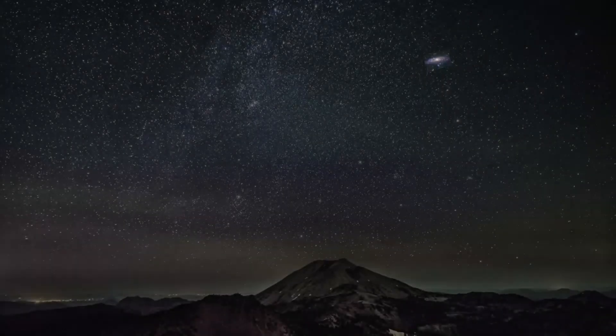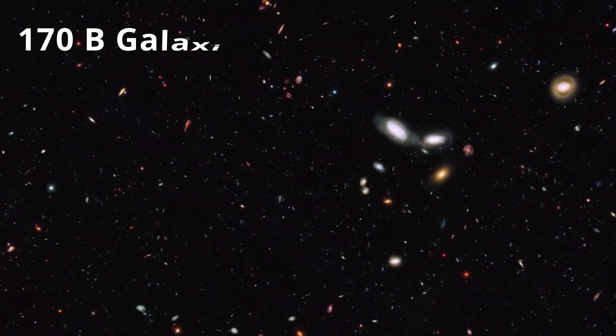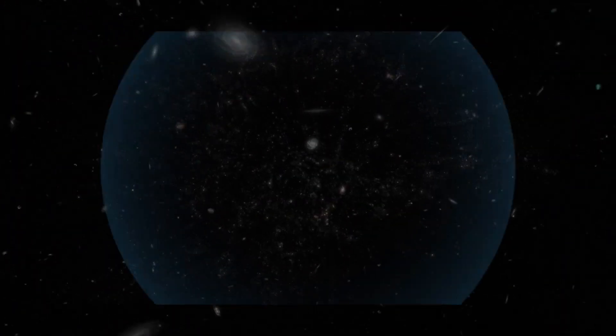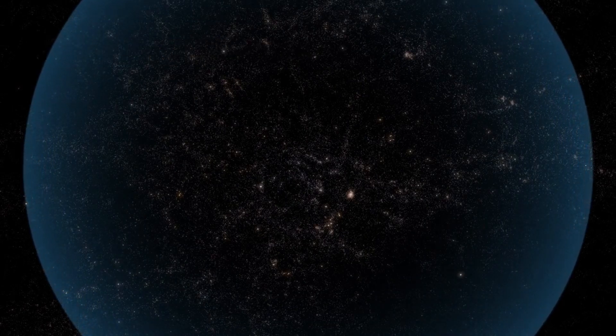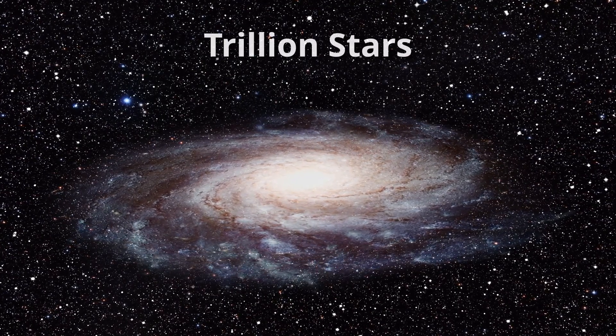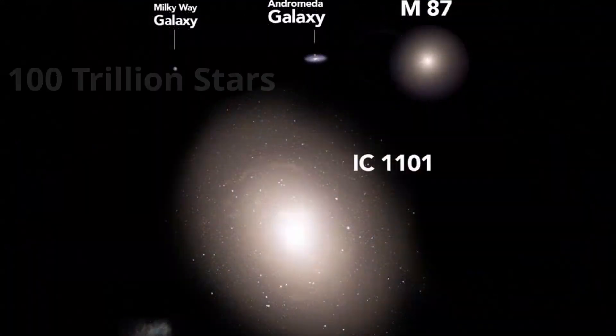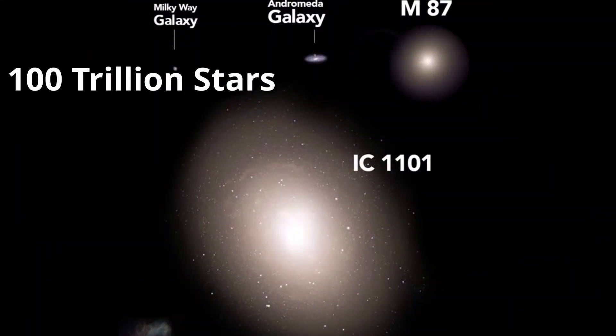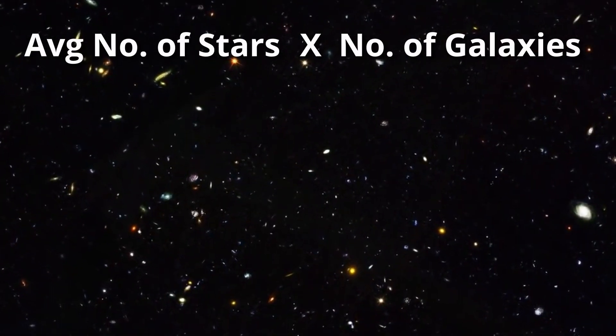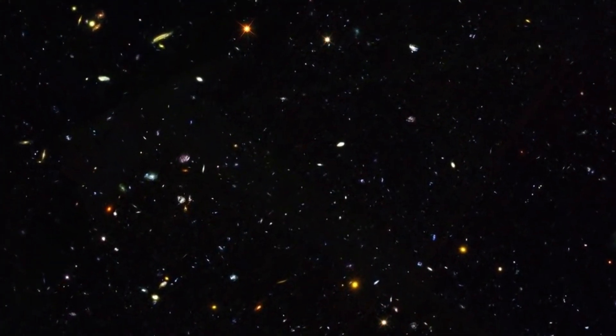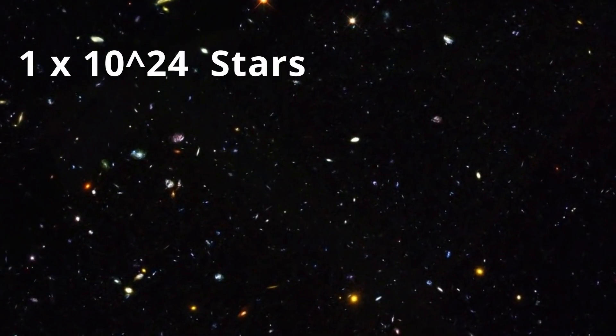Astronomers estimate that there are around 170 billion galaxies in the observable universe stretching out over a radius of some 45.7 billion light years. Some spiral galaxies have more than a trillion stars. Some giant elliptical galaxies have 100 trillion stars. By multiplying the average number of stars with the number of galaxies, scientists have estimated that there are roughly a septillion stars in the observable universe.